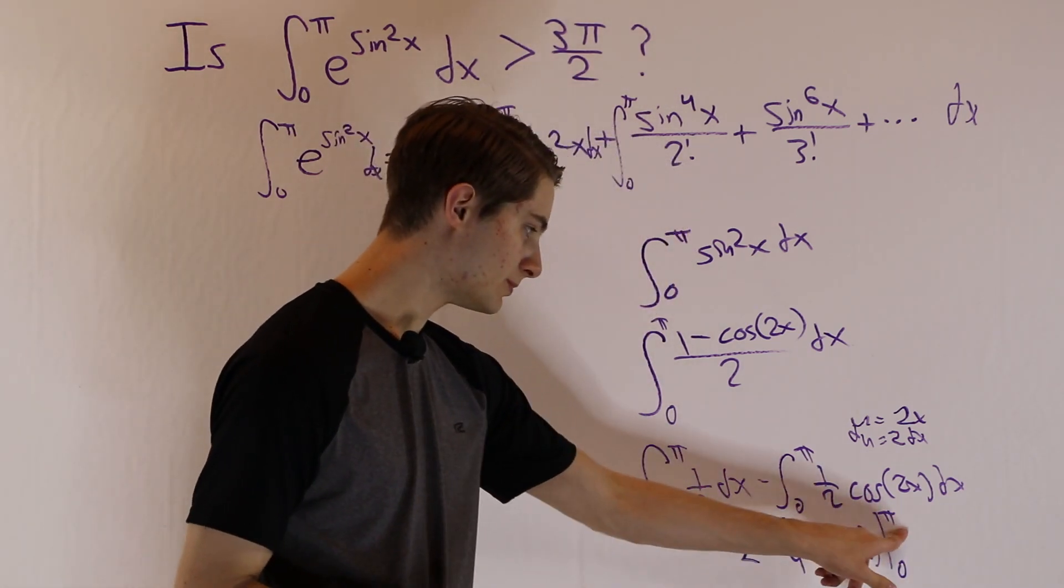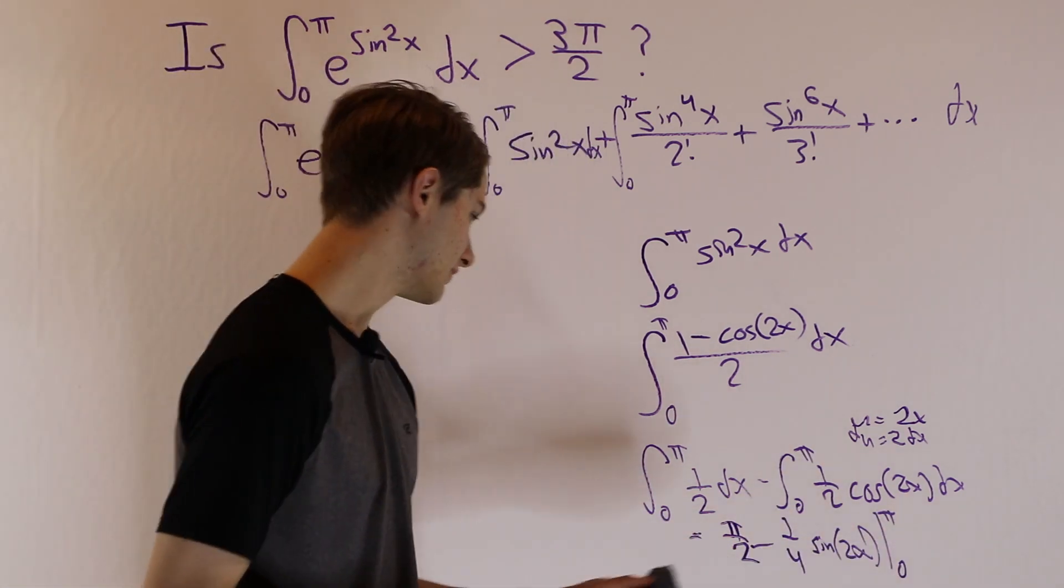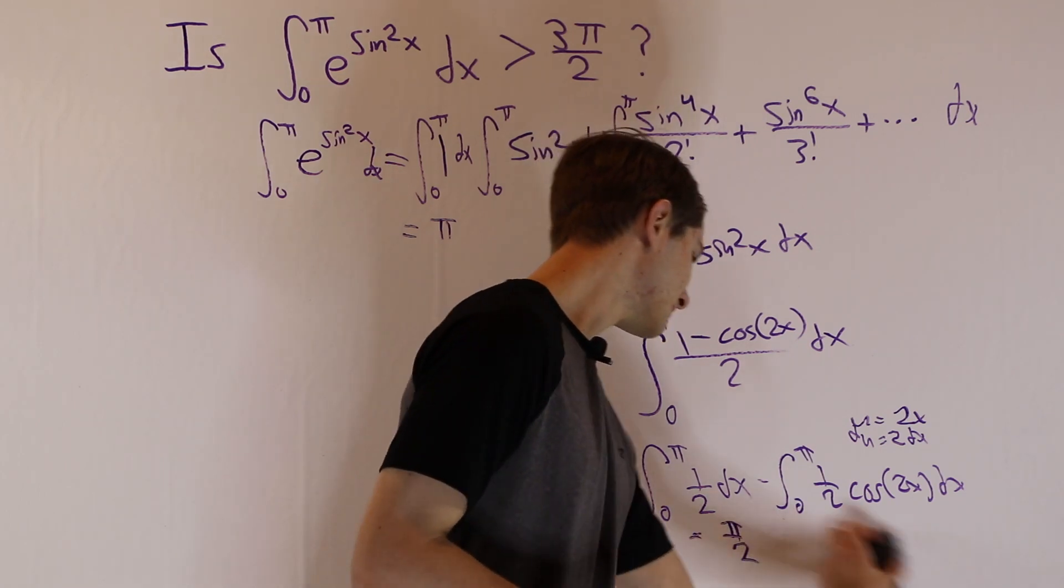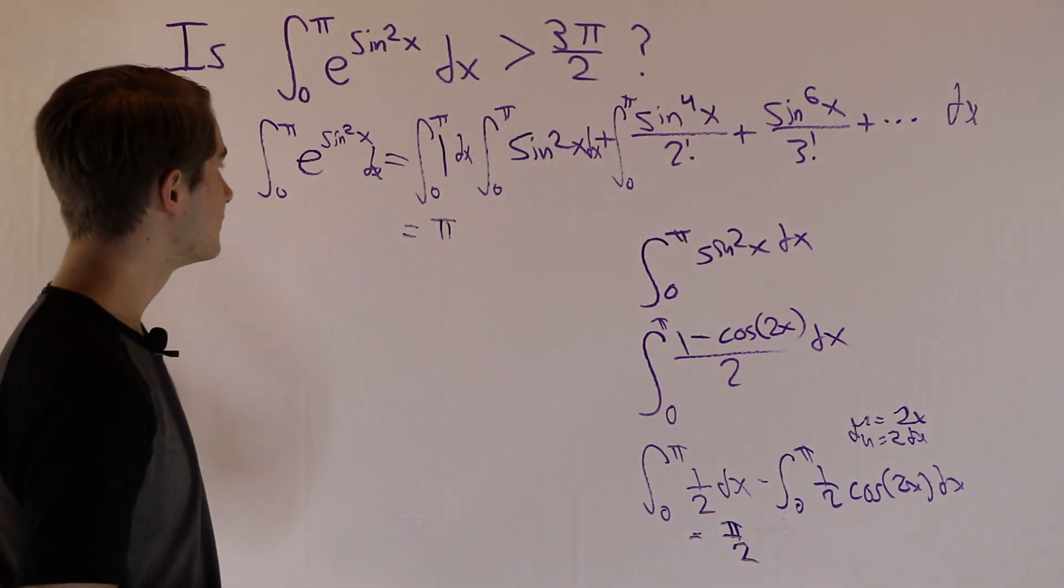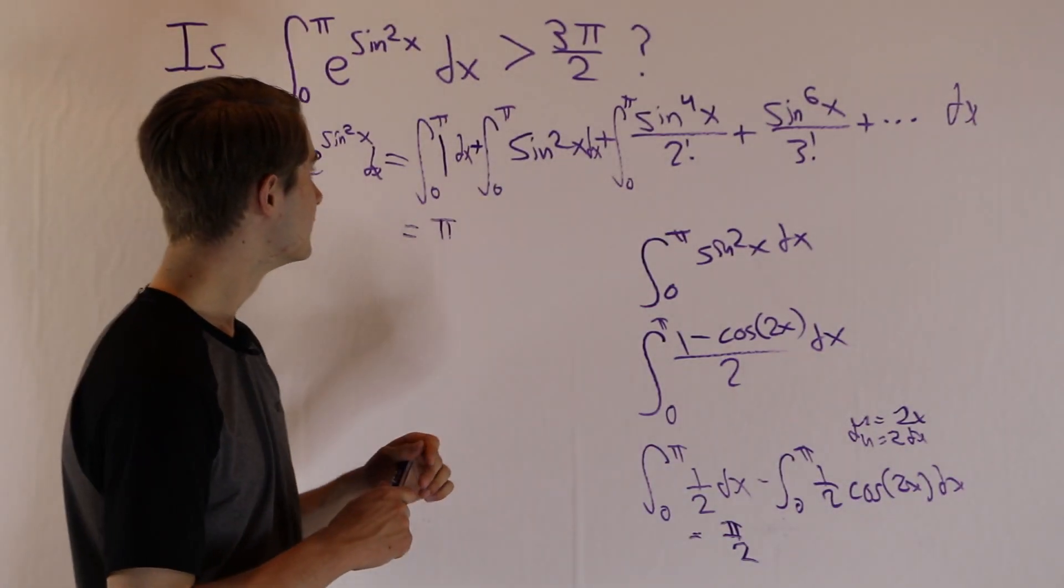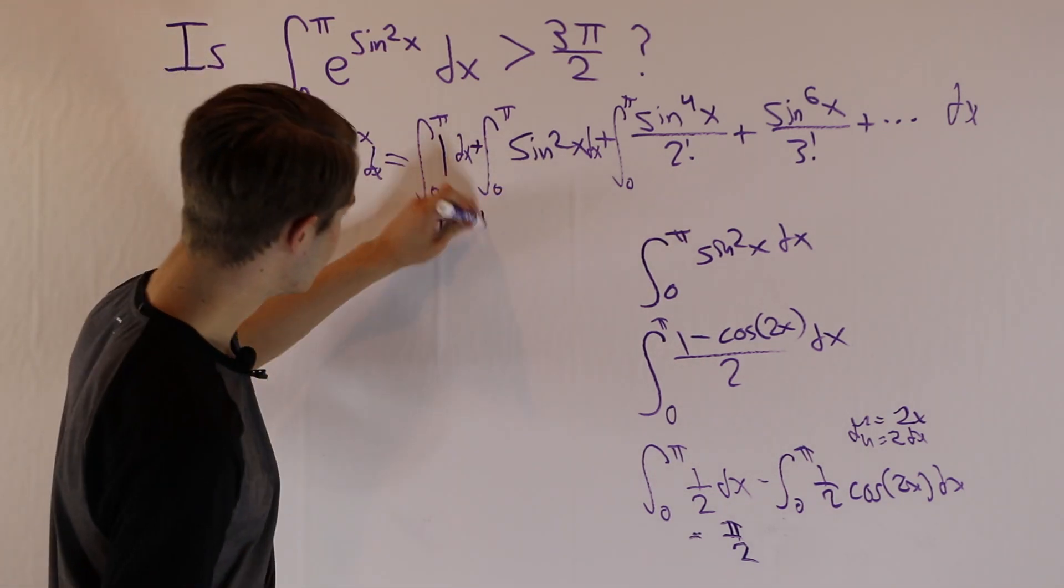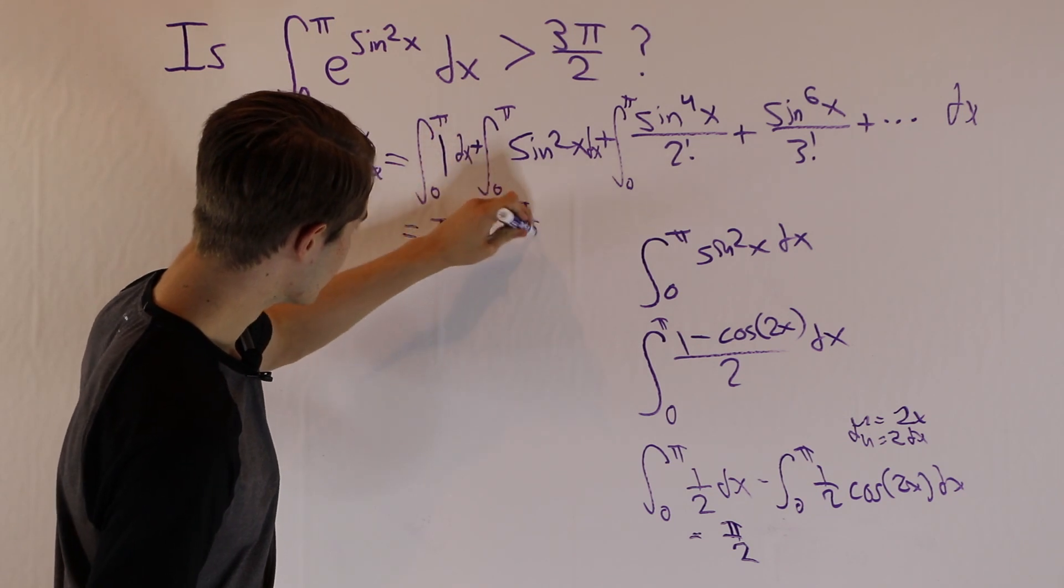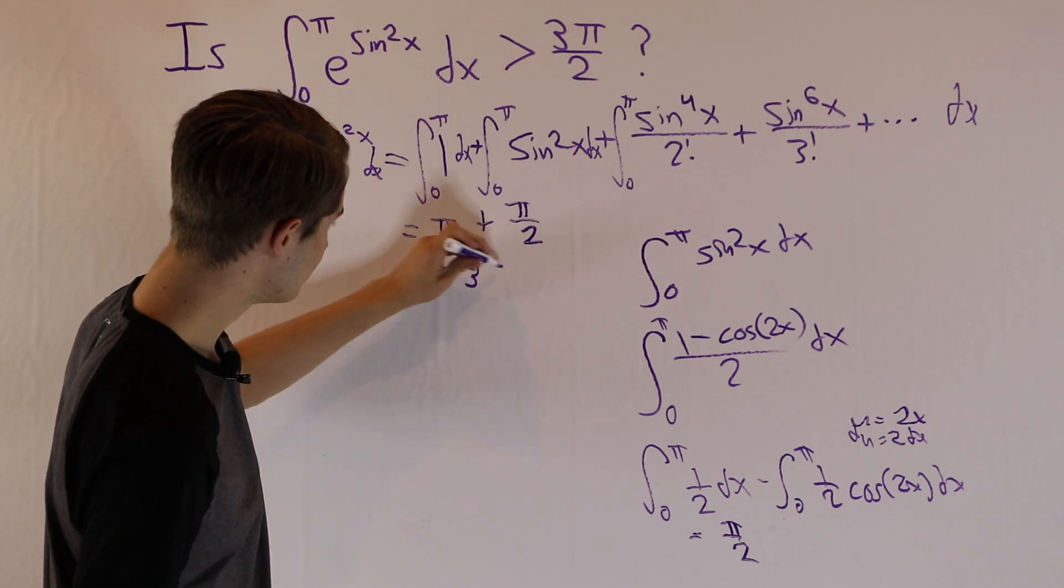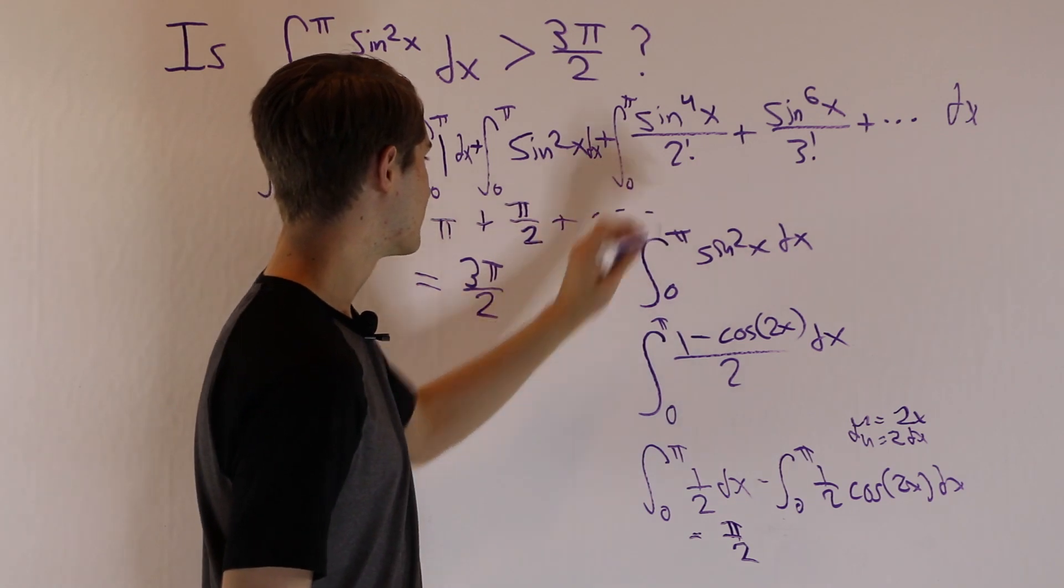What is this? Well, sine of 2π is just 0, and sine of 0 is just 0. So in fact, this entire part is just 0, so our answer becomes nothing but π over 2. Which means if we go back here, we're adding up these two integrals to start off. We have the integral of 1 dx is π, and then the integral of sine squared dx is π over 2. Which means these first two parts are going to be 3π over 2. Which is what we're looking at to start off. And then we're adding a bunch more stuff.